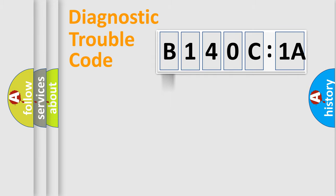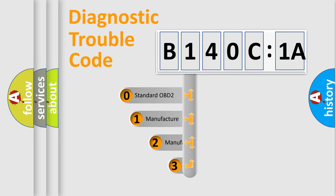Powertrain, Body, Chassis, Network. This distribution is defined in the first character code.